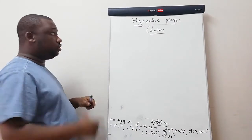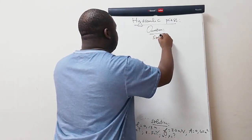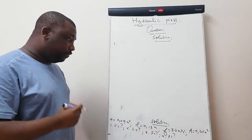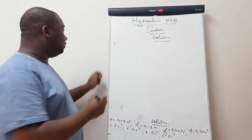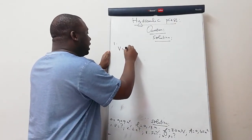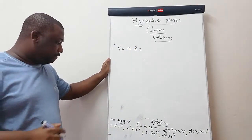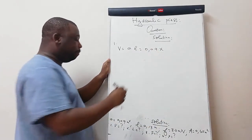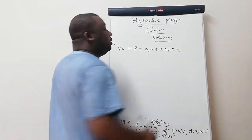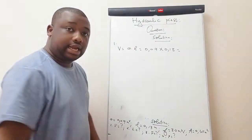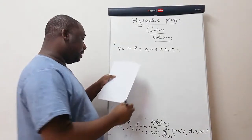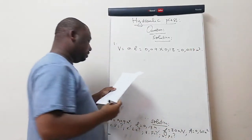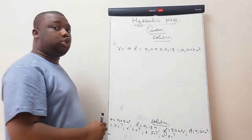Solution. Question one: find the volume displaced by the plunger. By definition, V = area × stroke length = 0.09 × 0.13. Calculating this gives V = 0.0117 cubic meters.